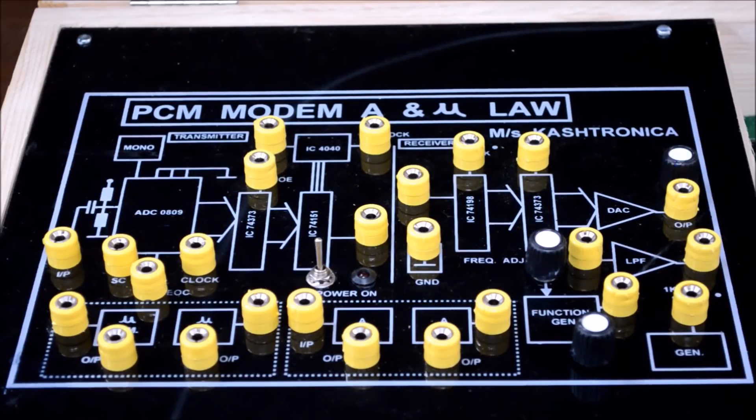Pulse Code Modulation is a method used to digitally represent sampled analog signals. It is a standard form of digital audio in computers, compact disc, digital telephony and other digital audio applications.